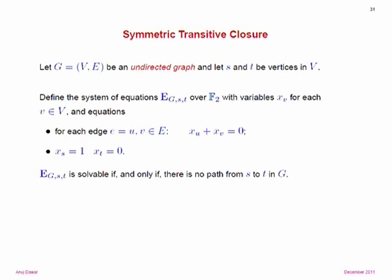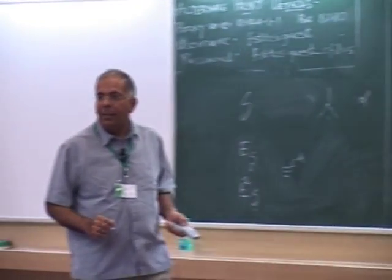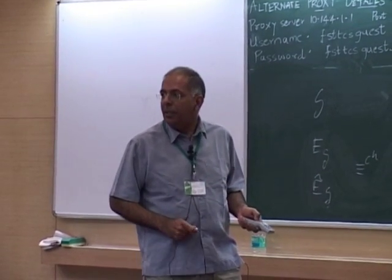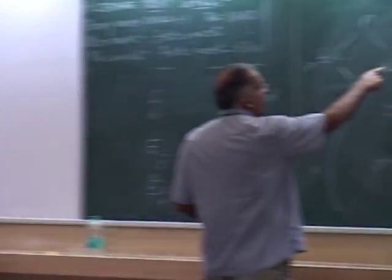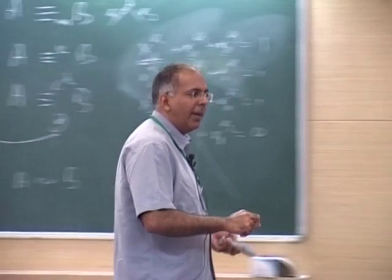This is crucially for undirected graphs. Could you do the same for directed graphs? Could you express directed reachability in this form? Well, if you could, you would prove that inclusion — because directed reachability is complete for NL, and definability here would place it in parity L.